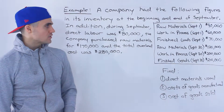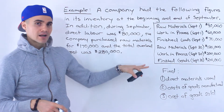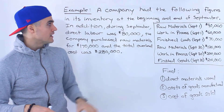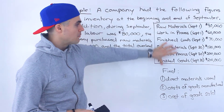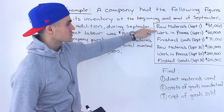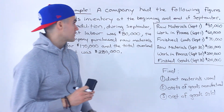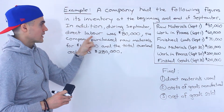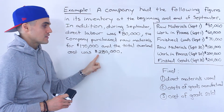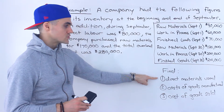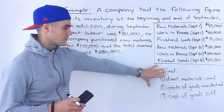Welcome back, Patrick here. Moving on to an example, let's try to take that manufacturing flow chart we went over and put it through a scenario. This example is written out in the lecture notes so you don't have to write all of this out. Basically, we have a company that had the following figures in their inventory at the beginning and end of September — raw materials, work in process, and finished goods for both September 1st and September 30th. During September, direct labor was $80,000, the company purchased raw materials for $170,000, and total overhead cost was $280,000. We need to find: number one, direct materials used; number two, cost of goods manufactured; and number three, cost of goods sold.